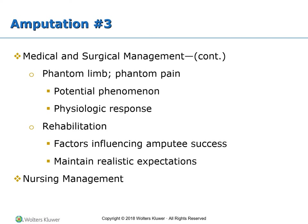The surgeon informs the client of the potential phenomenon of phantom limb sensation, which is a feeling that the amputated portion of the limb still remains. It is a normal, frequently occurring physiologic response after amputation. Phantom sensation can persist for months or decades or can come and go; although clients are aware of phantom sensations, they usually learn to ignore them. Phantom pain is pain or other discomfort such as burning, tingling, throbbing, or itching in the missing limb. Severe, prolonged phantom limb pain may require surgical removal of the nerve endings at the end of the stump.